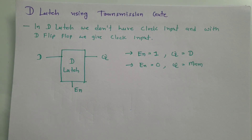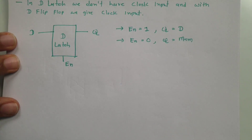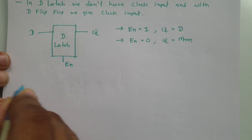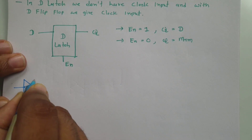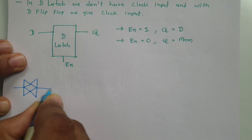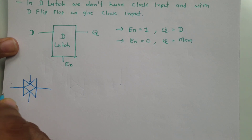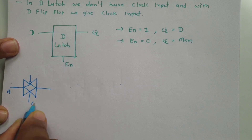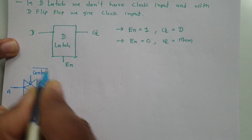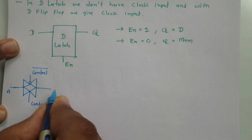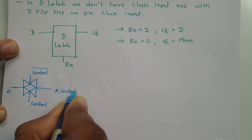Now we will implement this DLH using transmission gate. First of all, one should know what is transmission gate. In transmission gate, we have this symbol. We have control signal, so if my input is A and this is my control signal, then here I should be connecting control bar. My output will be A dot control.